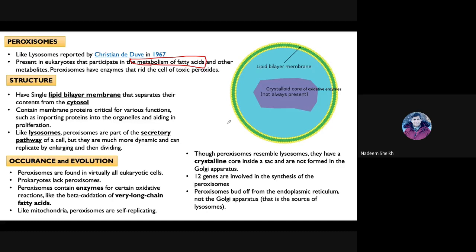Looking at the structure, peroxisomes have a single membrane made up of a lipid bilayer. The inner contents of the peroxisome are separated by this membrane from the cytosol. Inside, it contains enzymes which are sometimes present in the form of a crystalline core, and most metabolic reactions — oxidation and reduction reactions — occur within the peroxisome.